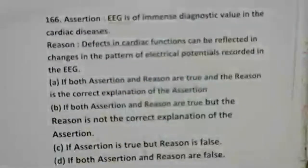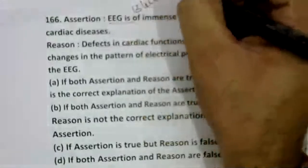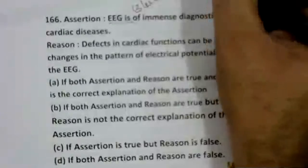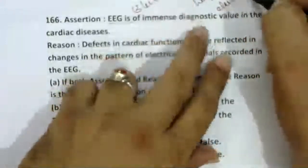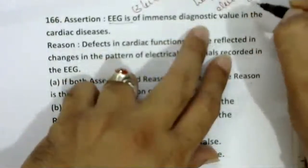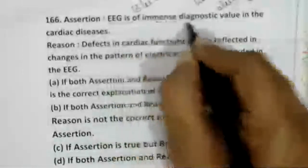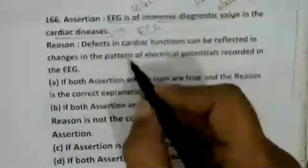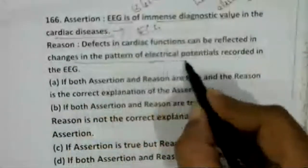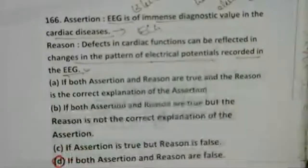EEG stands for electroencephalogram, which mainly helps to detect electrical activity in the brain. It is stated that EEG is of immense diagnostic value in cardiac muscles — this is wrong; that should be ECG (electrocardiogram). Defects in cardiac functions are reflected in ECG, not EEG. Both assertion and reason are wrong — option four.